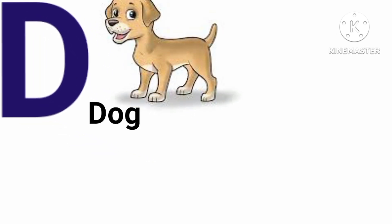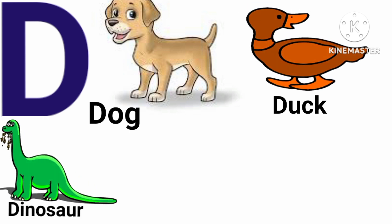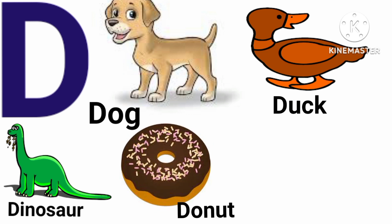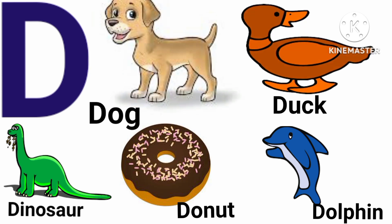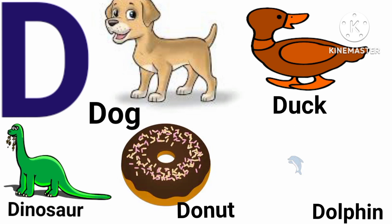D for dog. D for duck. D for dinosaur. D for donut. D for dolphin. Let's repeat these words. Dog. Duck. Dinosaur. Donut. Dolphin.